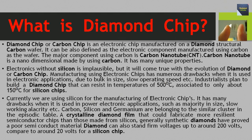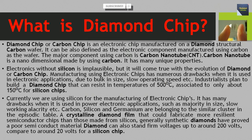Silicon has many drawbacks when used in power electronic applications, such as large size and slow working speed. Carbon, silicon, and germanium belong to the same group in the periodic table. A crystalline diamond that would fabricate more resilient semiconductor chips than those made from silicon — generally, synthetic diamonds have proved a poor semiconductor material. Diamond can also withstand voltages up to around 200 volts, compared to around 20 volts for a silicon chip.